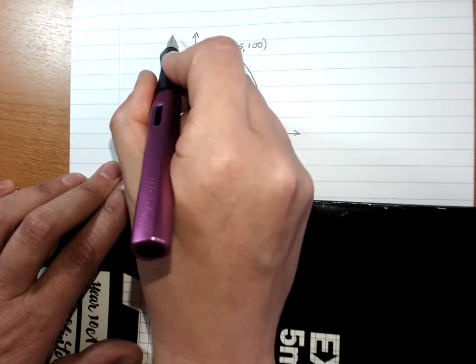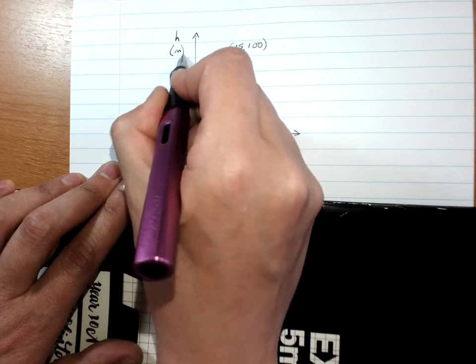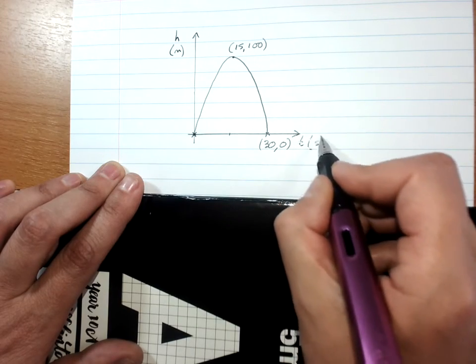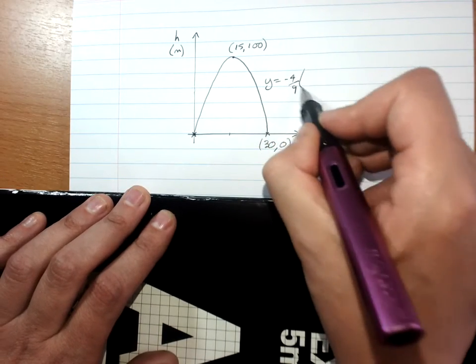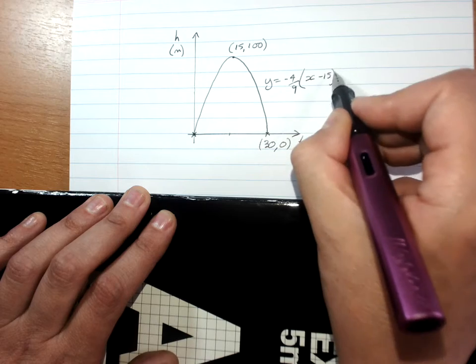Label your axes. This is h in meters. This is time in seconds. Label your rule: y equals negative 4 over 9, x minus 15 squared plus 100.